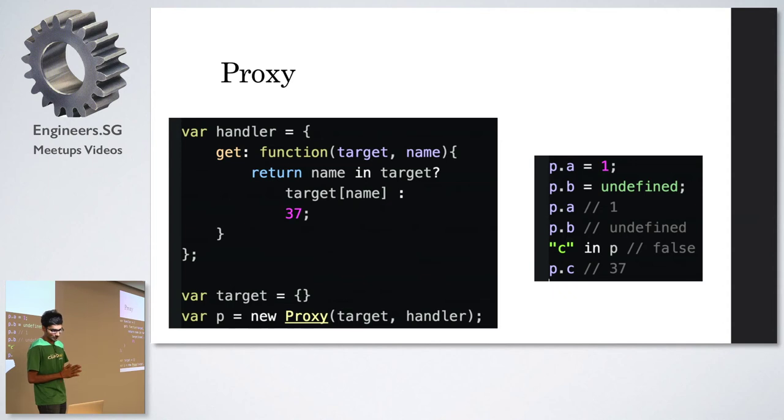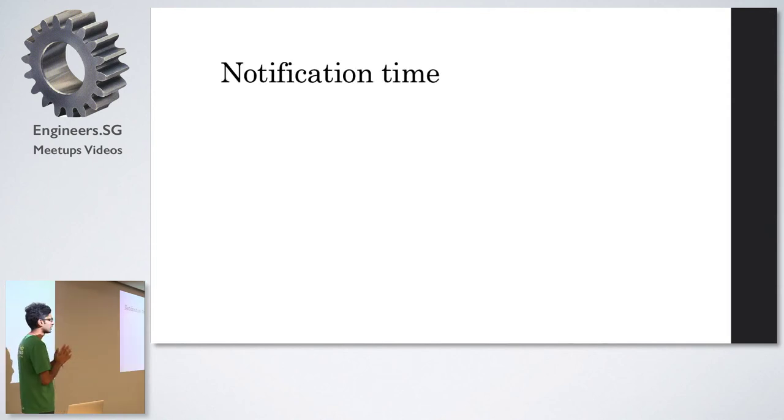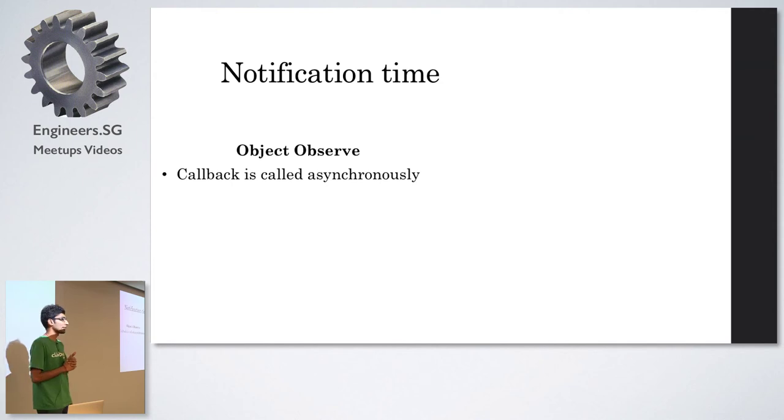So it sort of behaves, some things are similar to object.observe. One thing which is different from object.observe and proxy is when you get notified of your changes. For object.observe, the callback is called asynchronously. So you just say you want to observe an object and you get notified later on when someone is making changes to it, like accessing it or something, not access, sorry, delete or updating it and so on. This actually, this notification comes at the end of each microtask. So without going too much into it, it's basically when all your JavaScript stack is empty and it's sort of the same time when your promises get resolved or something like that.